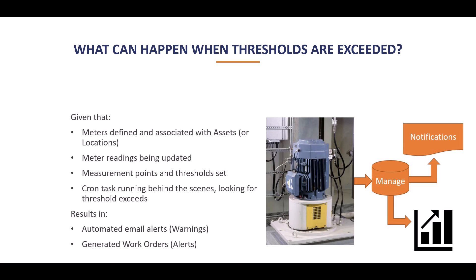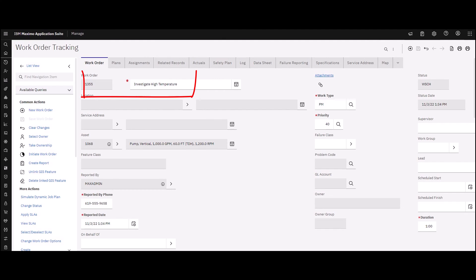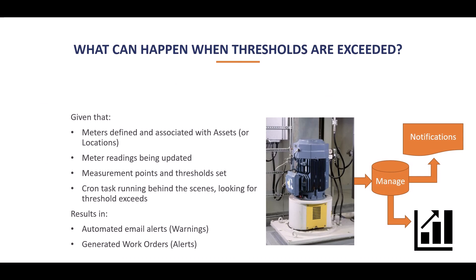Manage knows the thresholds for each measurement point and will generate warning emails or work orders if those thresholds are exceeded. The work orders are formed with information from our job plans and PM definitions. With just a few steps, we've created an automated environment using our criteria that lets us know when there's a problem. There are a few other features that condition monitoring brings, like its interaction with characteristic meters, but we'll leave those for you to explore. Enjoy your weekend.